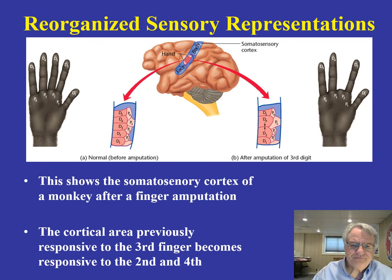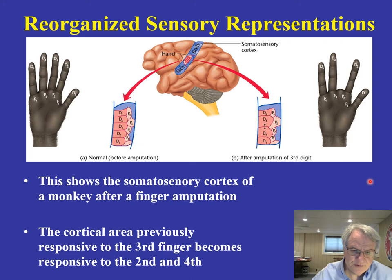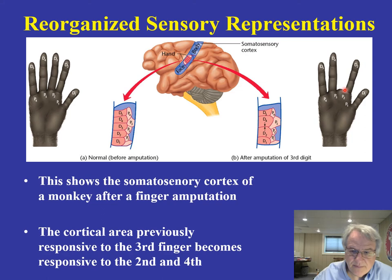This is also an interesting phenomenon called reorganization of sensory representation. Research done with nonhuman primates — in this case, chimpanzees — examines what happens if the third digit is surgically removed and what the somatosensory cortex looks like afterward. This is a case in which there's an amputation.